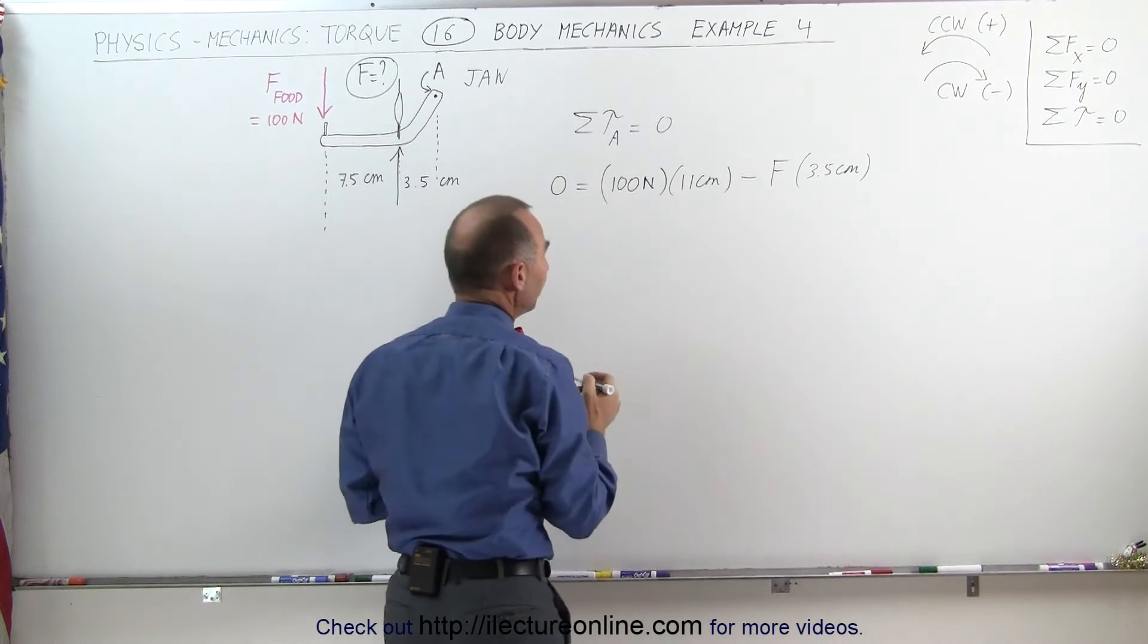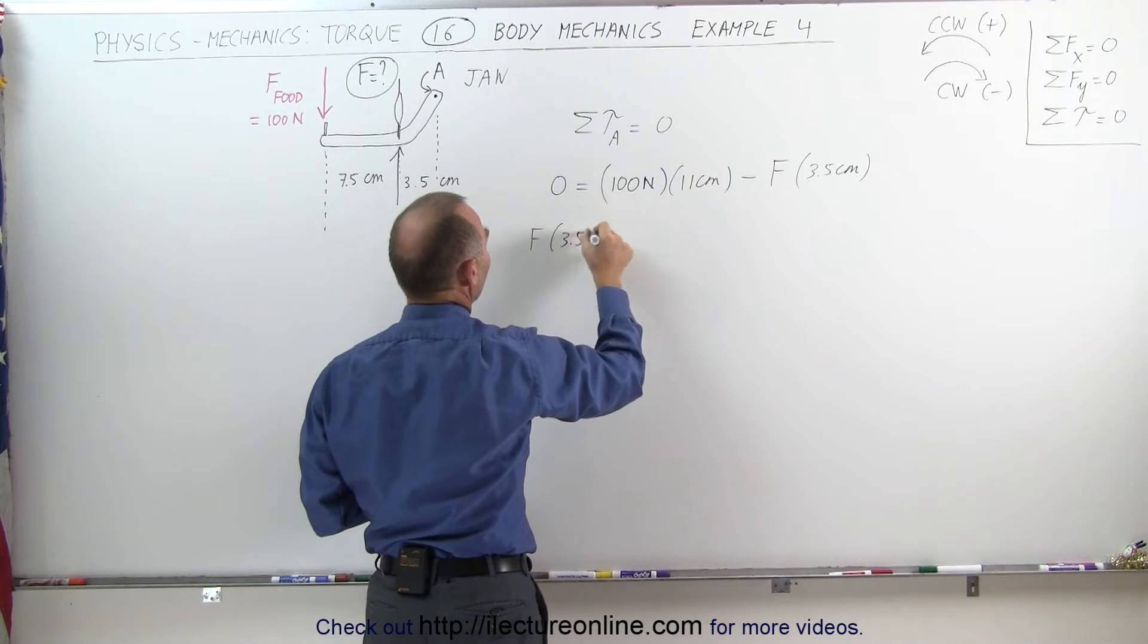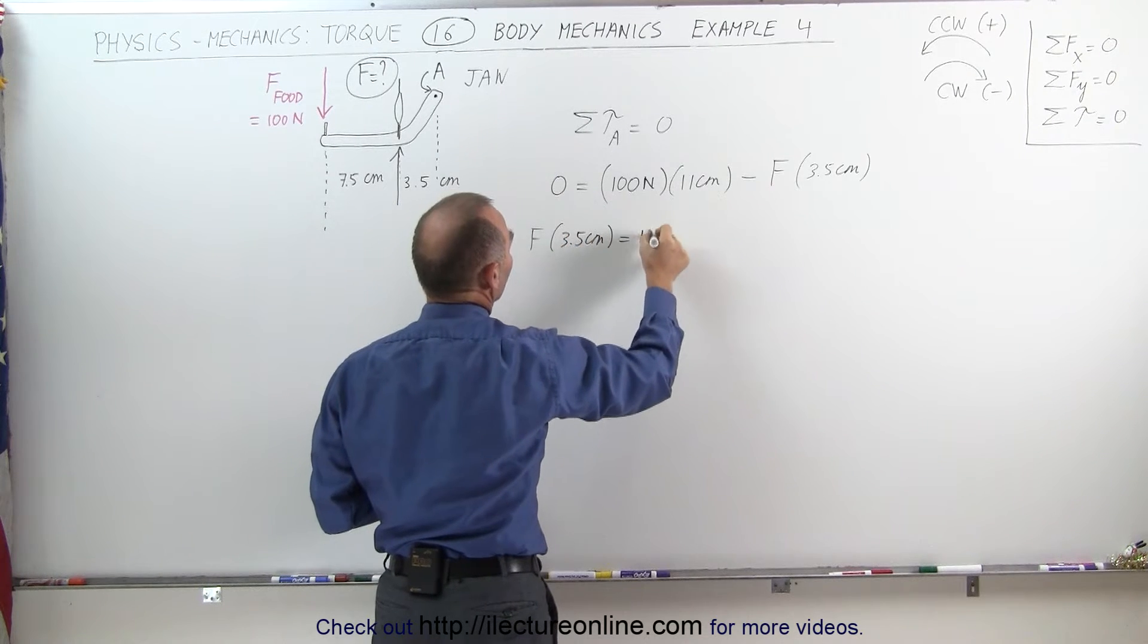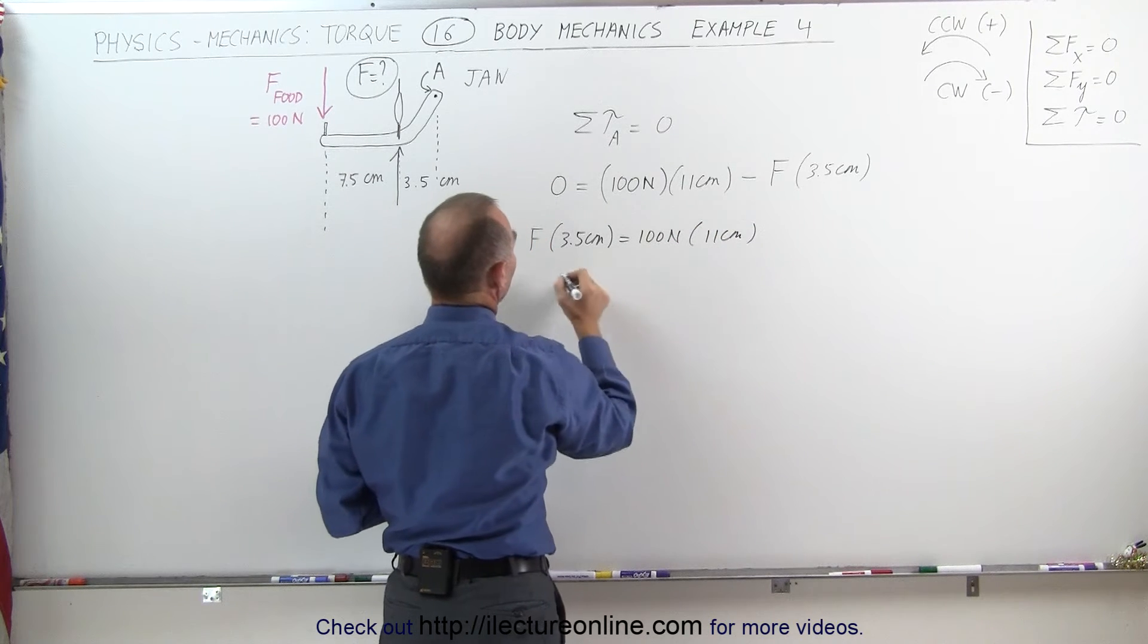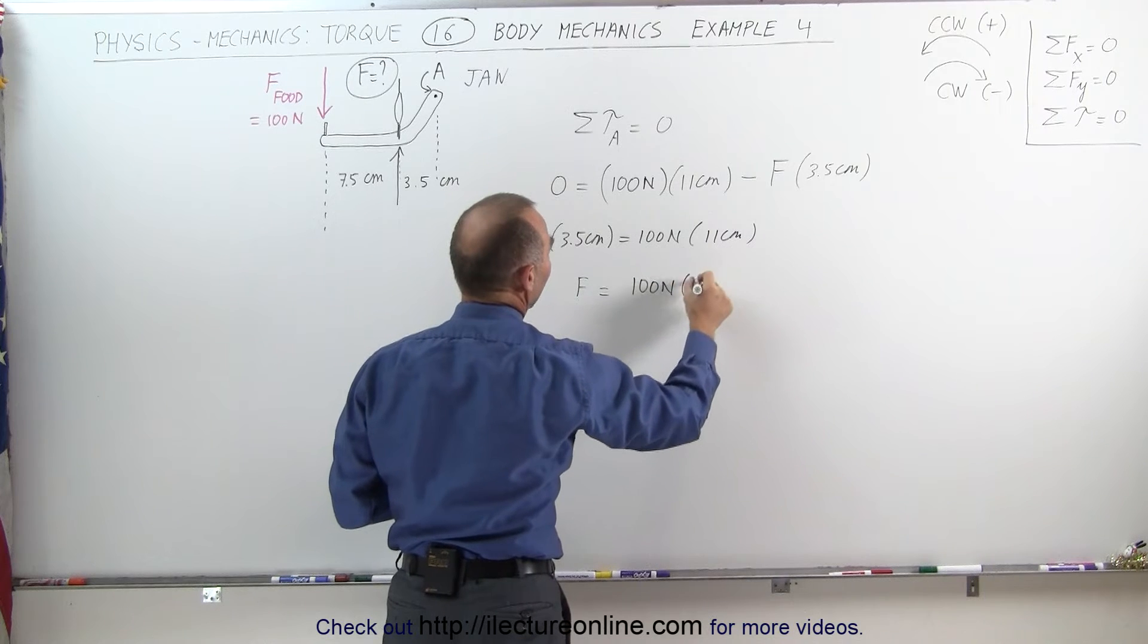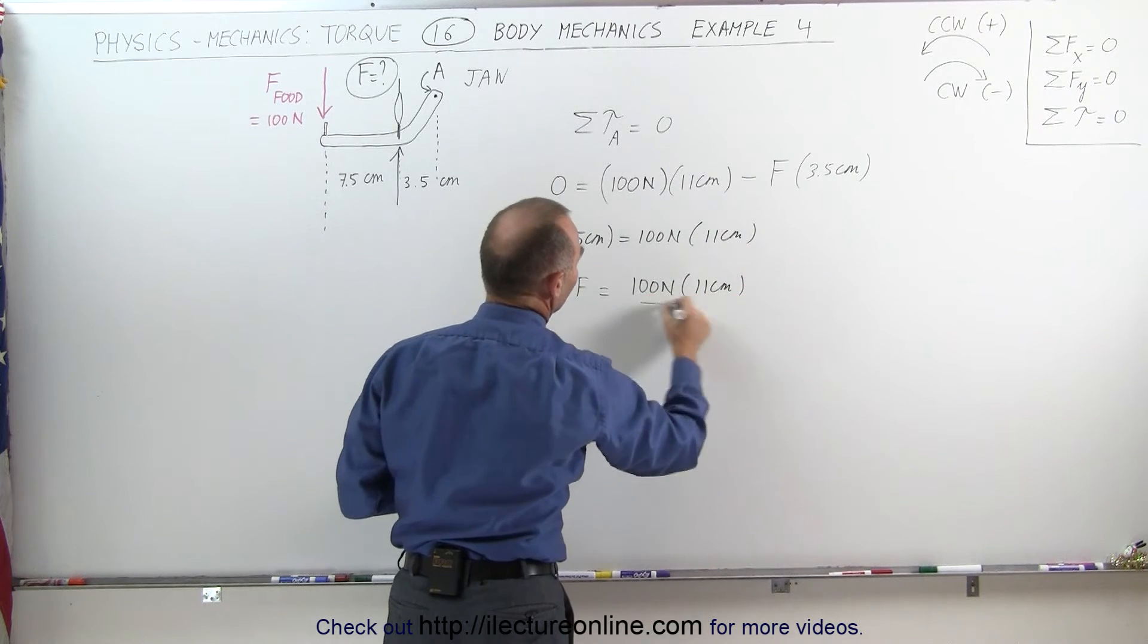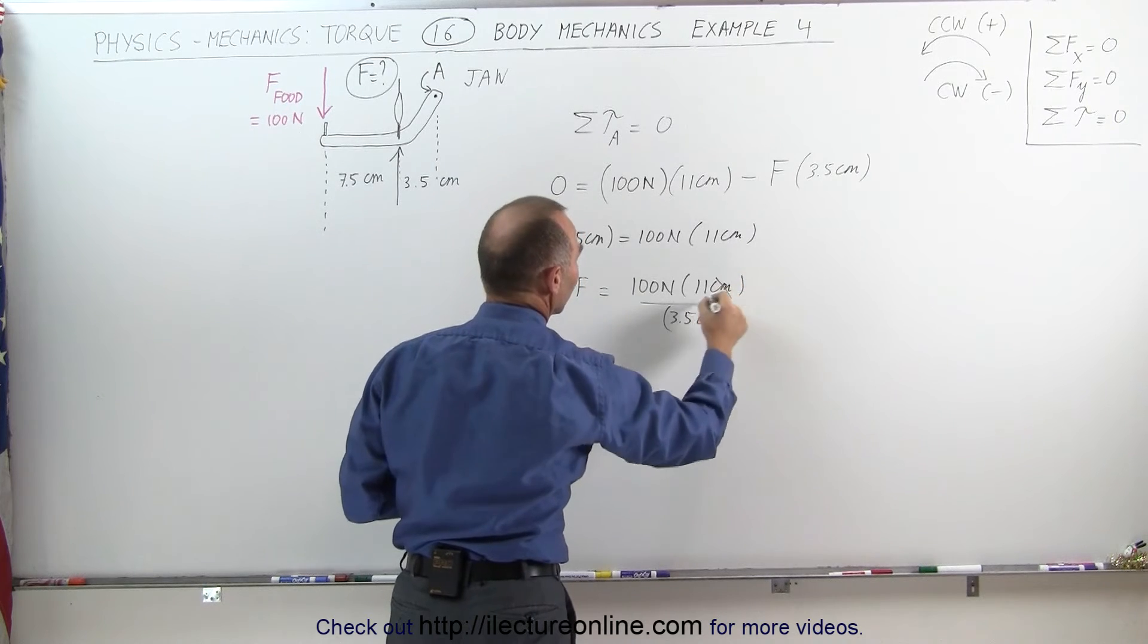It becomes a simple torque problem. Solving for F, we get F times 3.5 centimeters is equal to 100 newtons times 11 centimeters, and finally dividing both sides by 3.5 centimeters, we get 100 newtons times 11 centimeters, and then divide by 3.5 centimeters, and here you can see that centimeters cancels out.